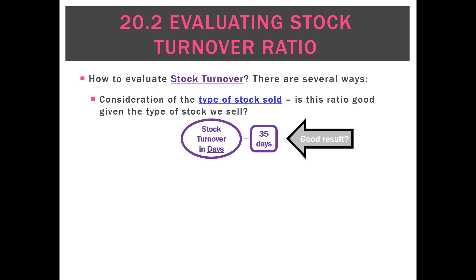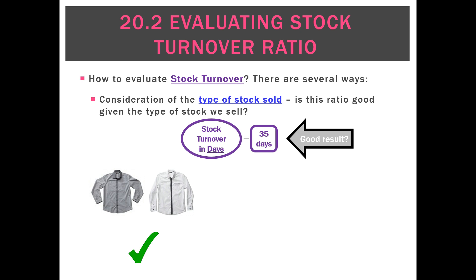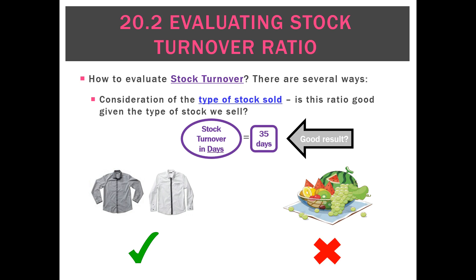What about if we've got a stock turnover ratio of 35 days? That's quite low. For clothing, we'd probably say yes that's good because clothing is seasonal, so we want to try and get it done within 90 days and we're achieving much quicker than that. If we're selling fruit and vegetables, we're going to say 35 days is bad — again it's going to have gone off before we've had a chance to sell it. So 35 days is good for some businesses and bad for others. We really can't give a certain number of days and say this is good or bad — it really depends on the type of stock that you sell.